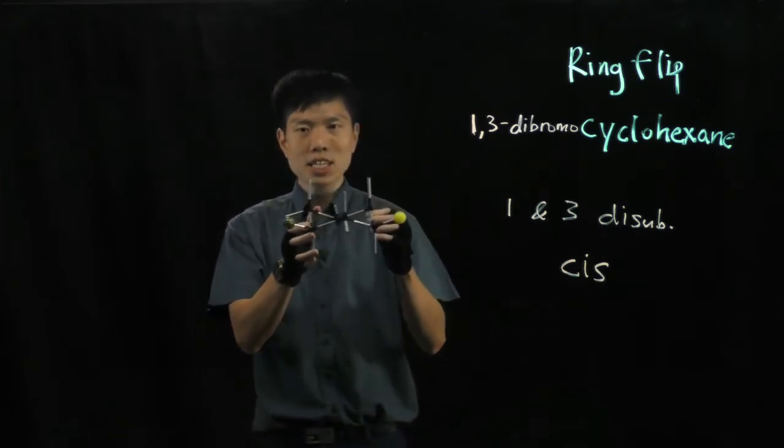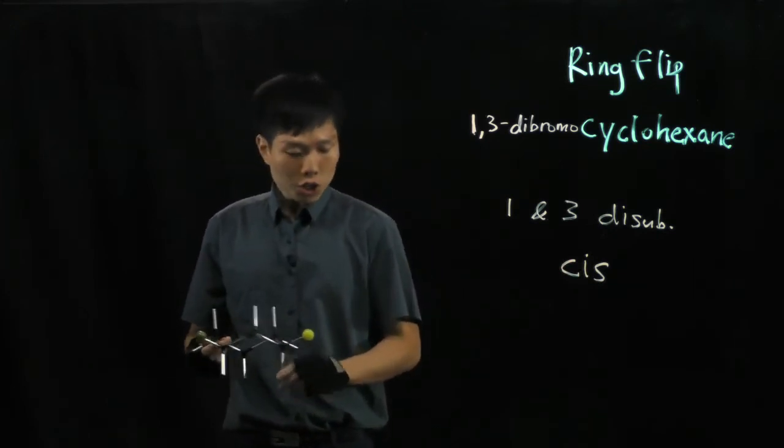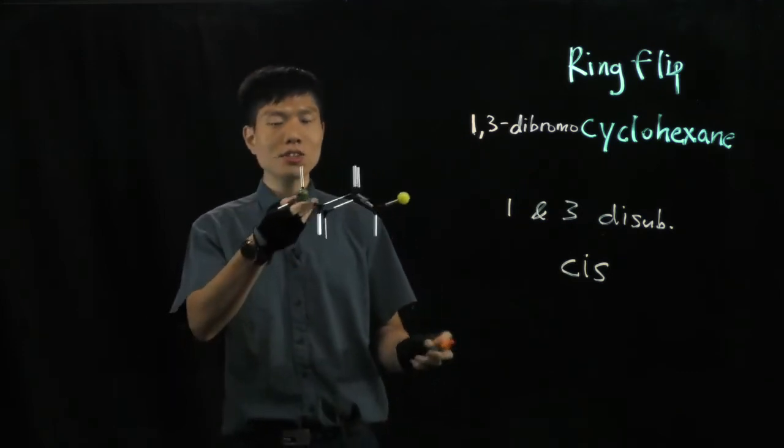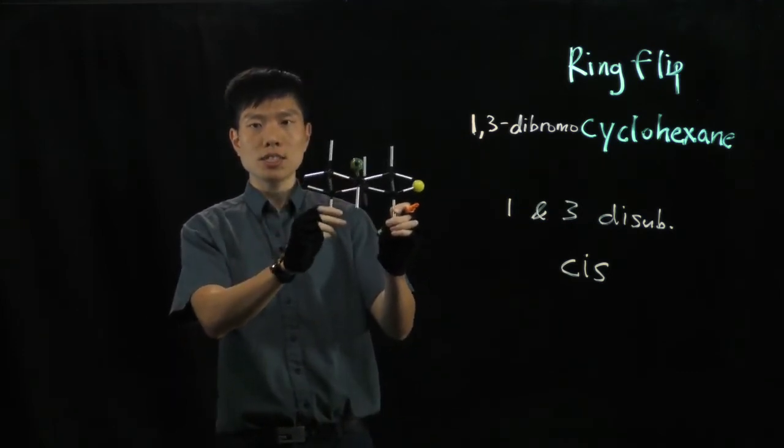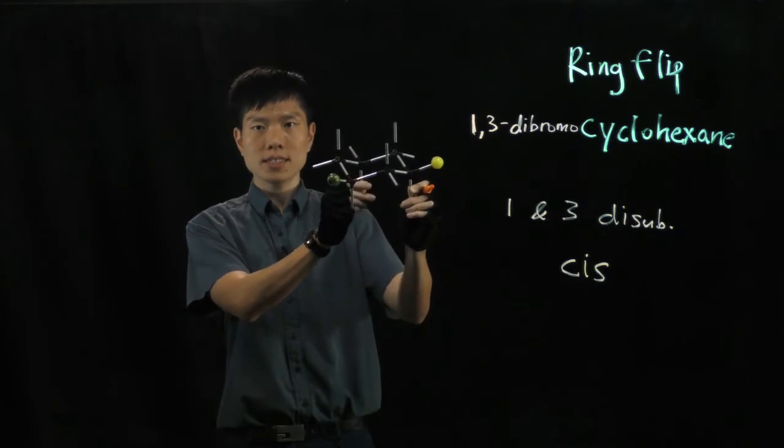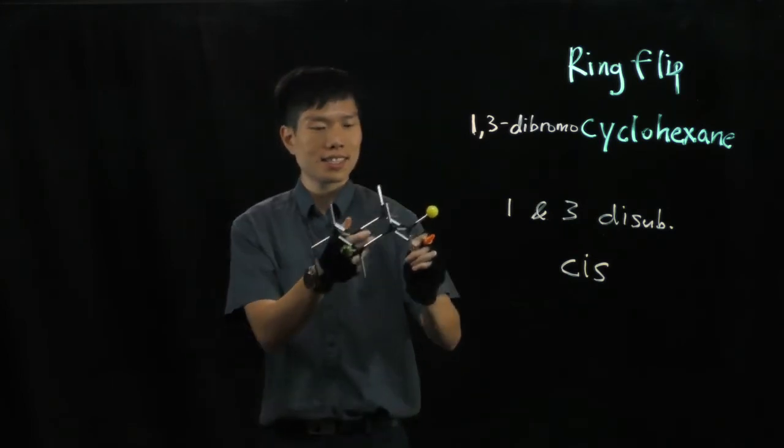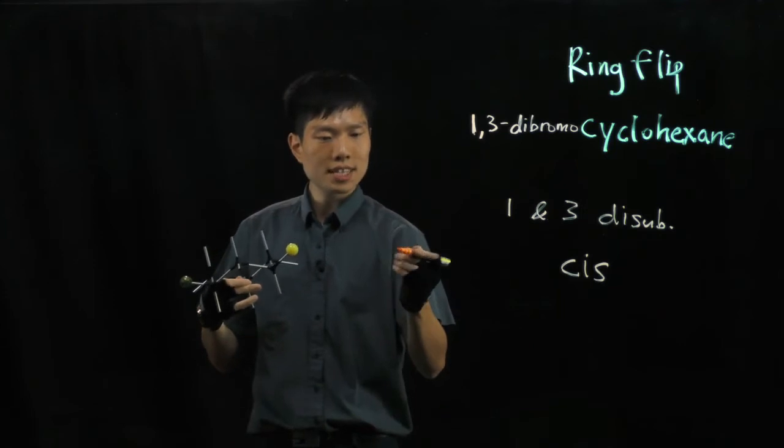And if I try to depict it using the sawhorse structure, how does it look? So in this case I look through in this manner. Can you see? Yeah, so it looks like this.